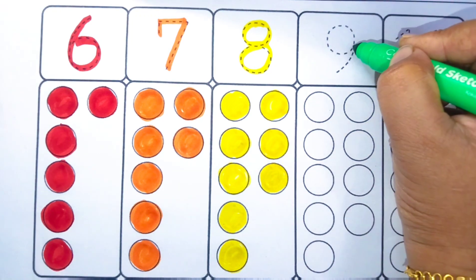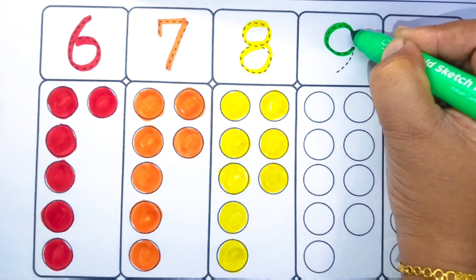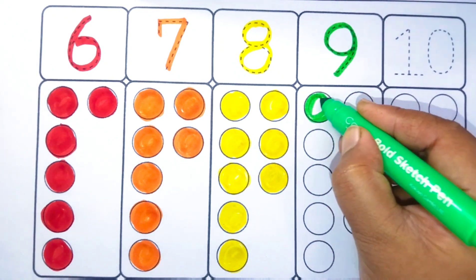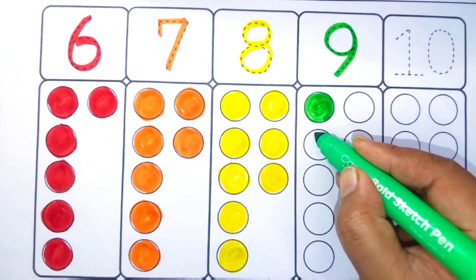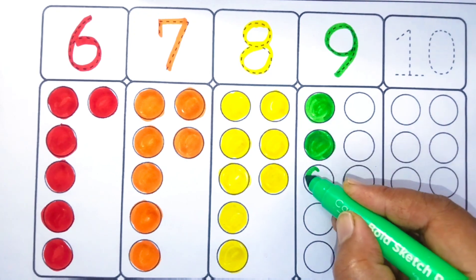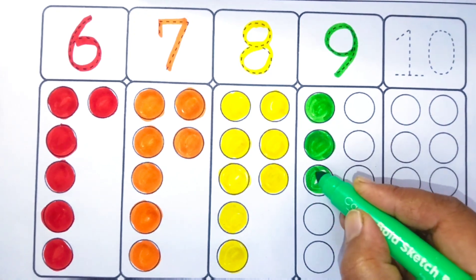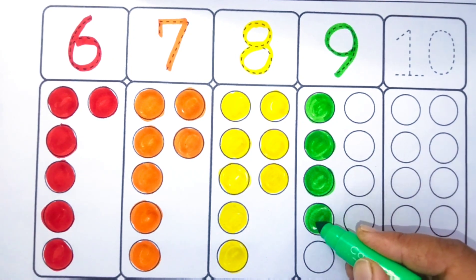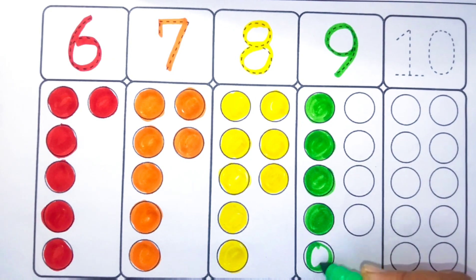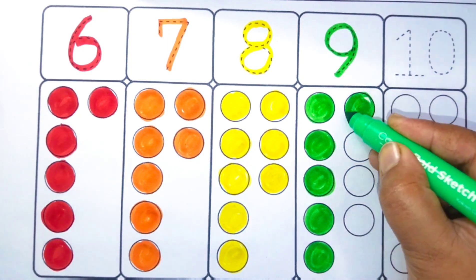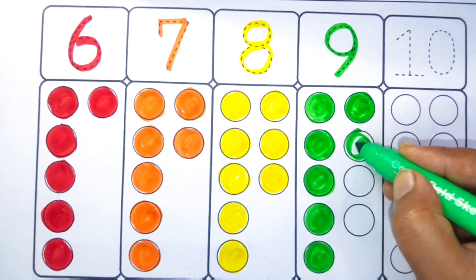Green color. Nine. One, two, three, four, five, six, seven.